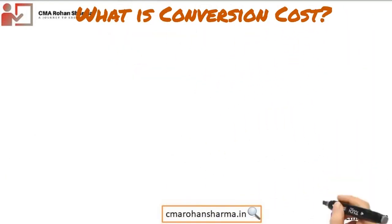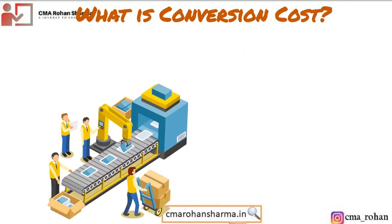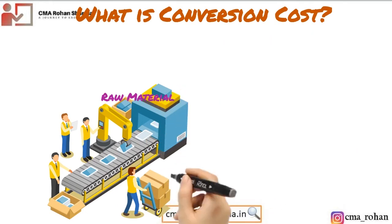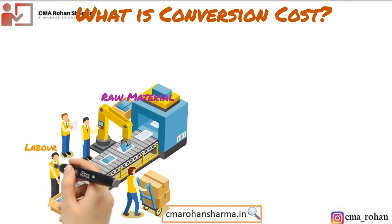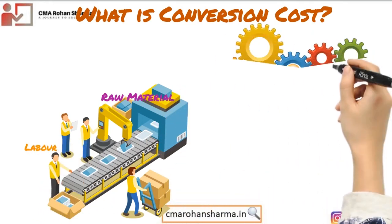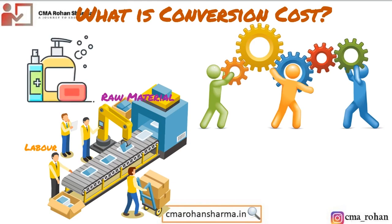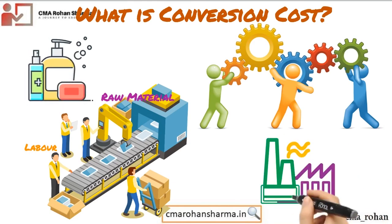What is conversion cost? Conversion cost is the sum of direct wages, direct expenses and overhead costs of converting raw material to the finished products, or converting a material from one stage of production to another stage.